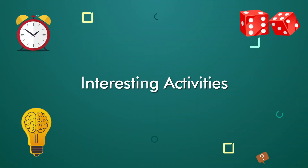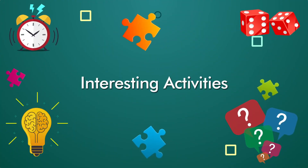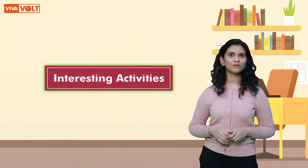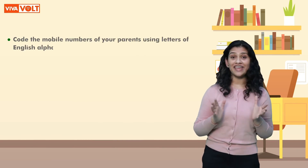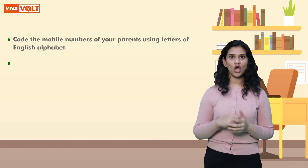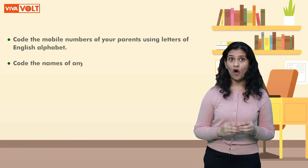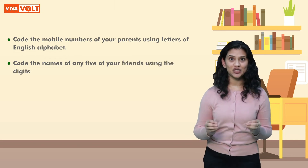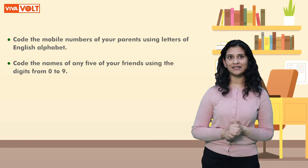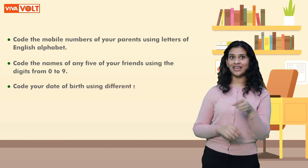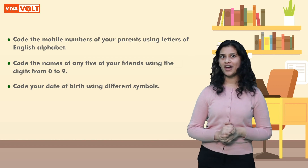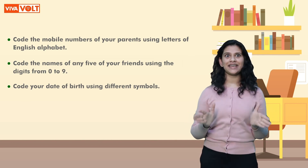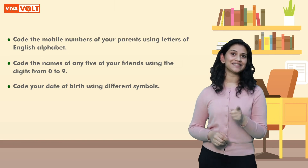Now let's do some interesting activities. I'm giving you a few homework assignments. First, code the mobile numbers of your parents using letters of the English alphabet. Second, code the names of any five of your friends using the digits from zero to nine. And third, code your date of birth using different symbols. I am sure now you will be able to easily code any text and decode the same also.